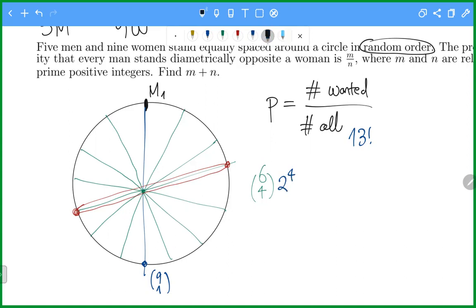Now, lastly, we need to consider the permutations of men among themselves, which is four factorial, and permutations of women among themselves, which is eight factorial.